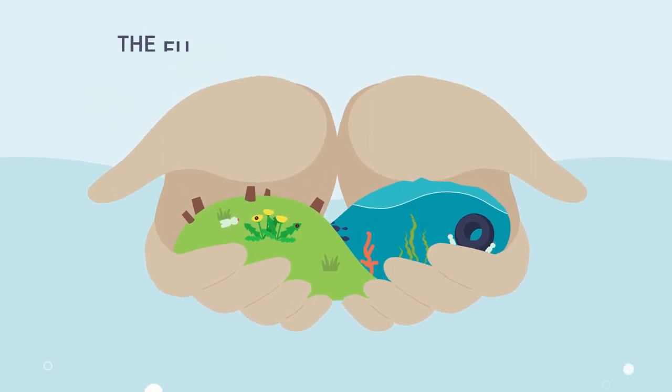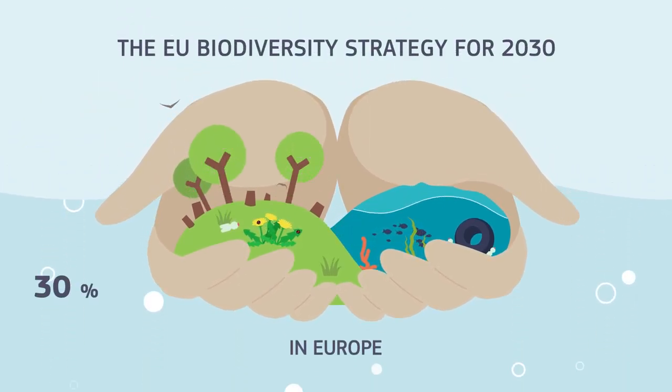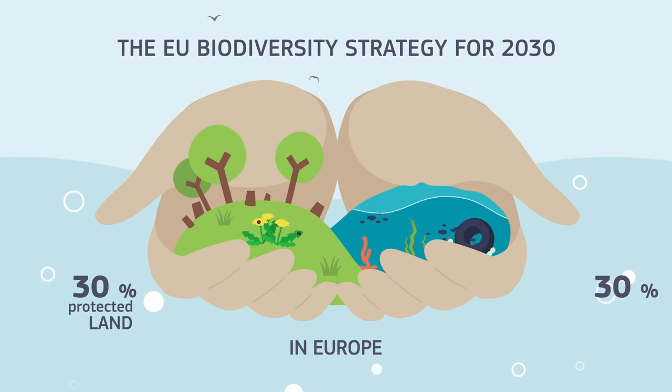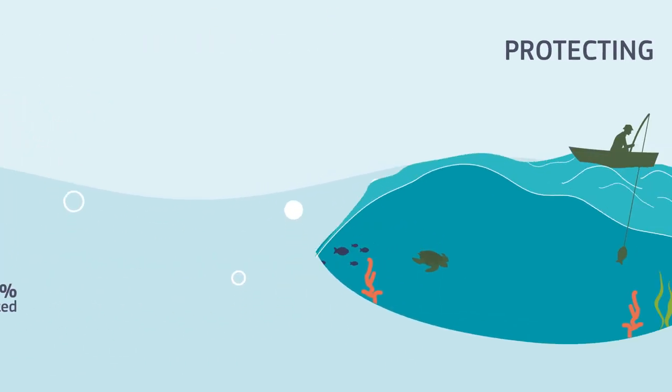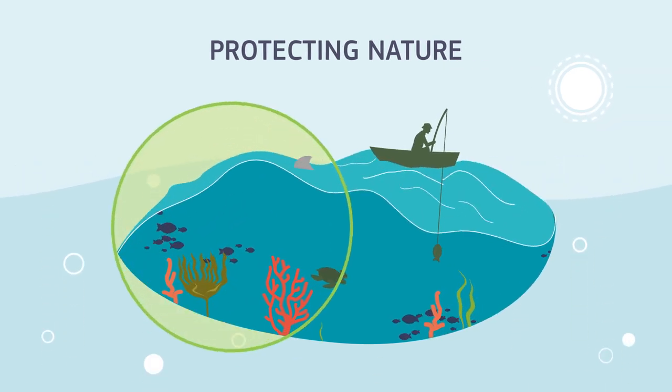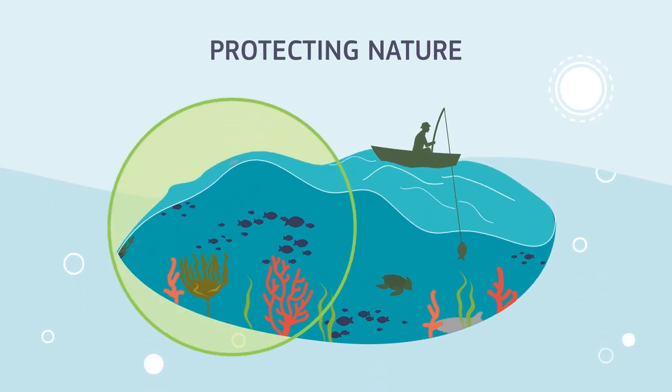Thanks to the EU Biodiversity Strategy for 2030, at least 30% of land and 30% of seas will become protected areas. Protected areas enhance the ability of our seas to provide us with healthy food by replenishing declining fish stocks, and are also essential for tourism.